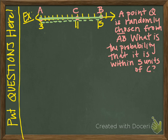Counting the units from A to B, we have 12 units from which to choose point Q. So of all the possible outcomes, there are 12. Now we look at our favorable outcomes — the things we want to happen. The question asks: what is the probability that point Q is within 5 units of C?